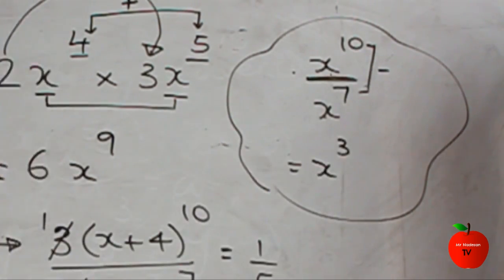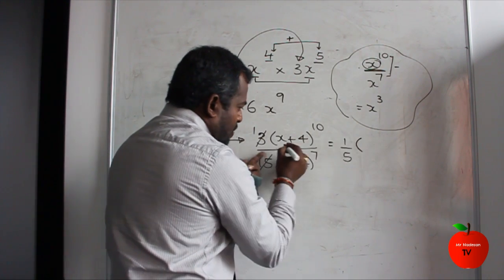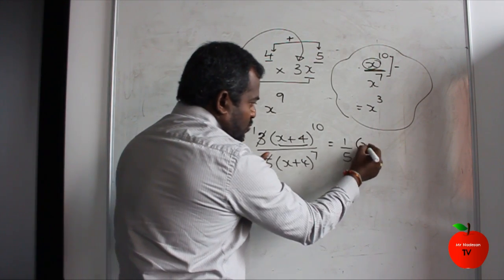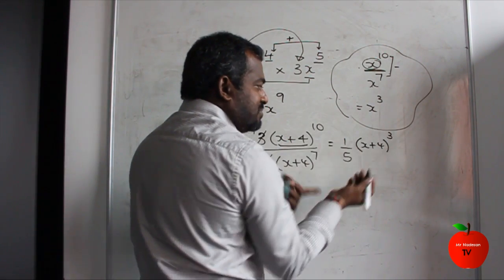So 10 minus 7 equals 3. Now, instead of x, our base is x+4. So your base is x+4. When you subtract, it means 10 minus 7 equals 3.